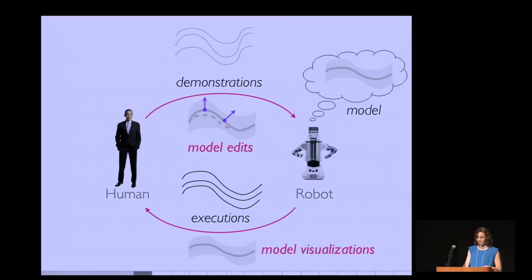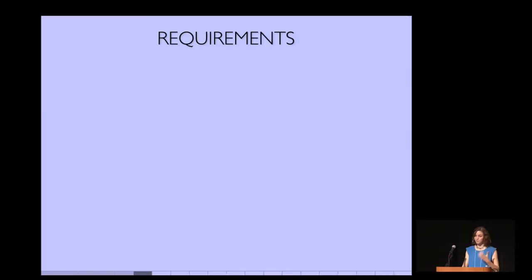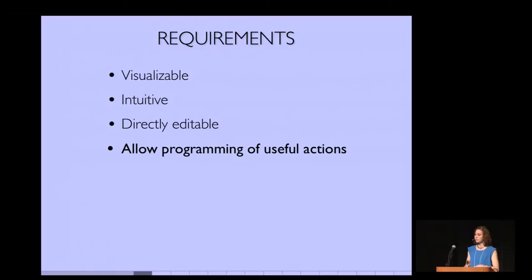So instead, we're saying let the user edit the model directly. So this is what we call interactive visualizations in this paper. Now, of course, all of these depend strongly on what model you are using. Obviously you cannot do this with every model. So we have some important requirements about the model that we're using to represent actions that are being taught. So the first is these need to be visualizable and they need to be intuitive for people. They need to be simple enough for people to understand what's going on. And it needs to make sense to directly edit these. Again, this might not be possible for all models. And this is in addition to allowing the programming of useful basic actions.